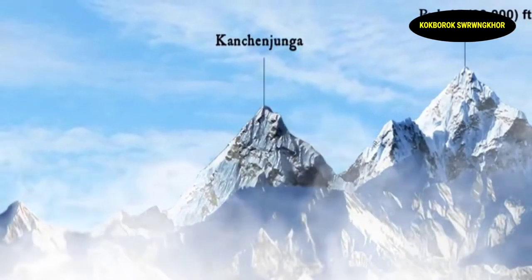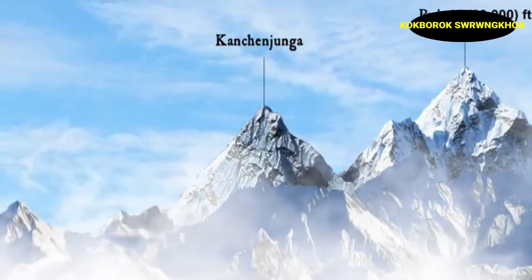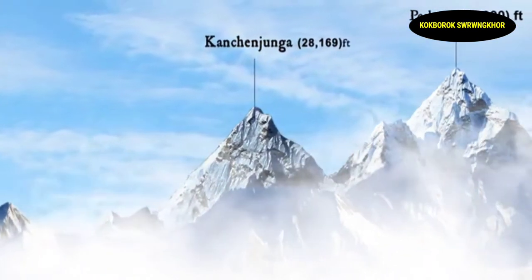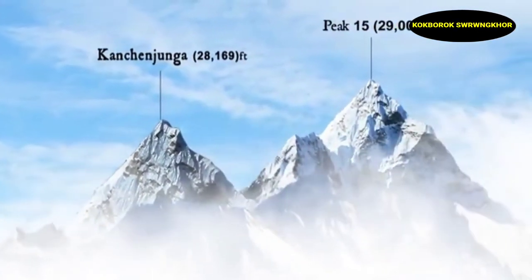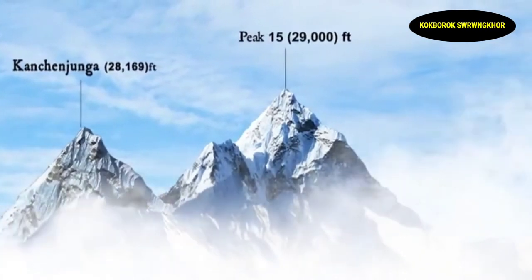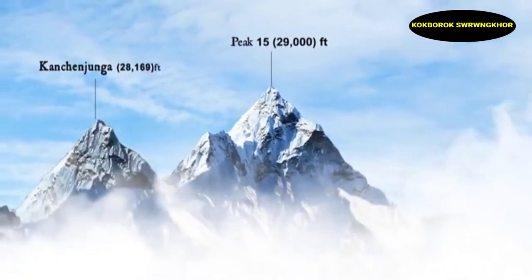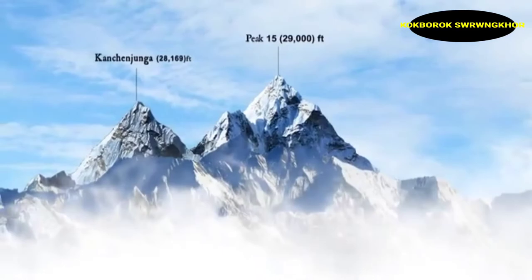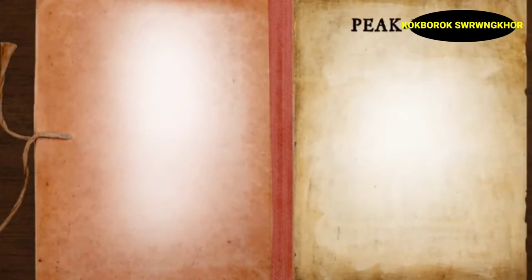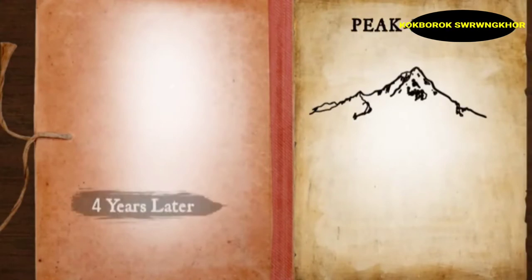Radhanath's calculation gave Peak XV a height of 29,000 feet. For comparison, Kangchenjunga's height was measured at 28,169 feet. Comparing the two, Peak XV was clearly higher. However, in 1852, Colonel Waugh did not immediately confirm Peak XV's measurement.